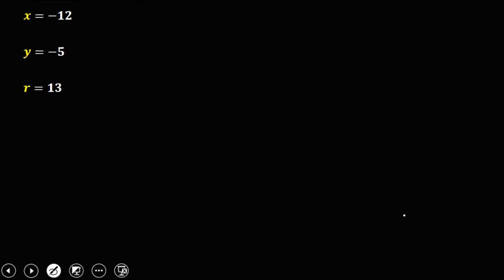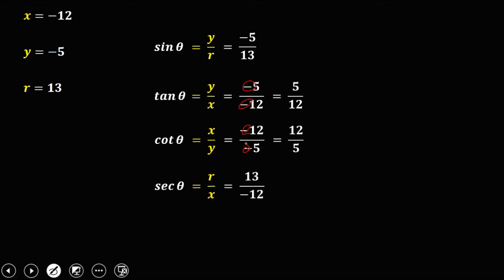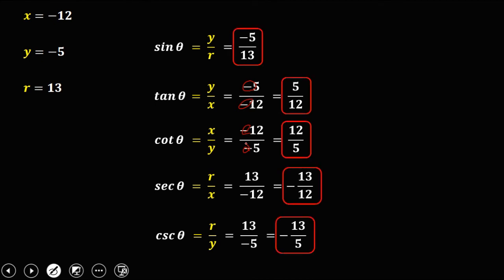Now that we have all three values — x equals negative 12, y equals negative 5, and r equals 13 — we can solve the remaining circular functions. Sine theta is y over r, that's negative 5 over 13. Tangent theta is y over x, that's negative 5 over negative 12, which is positive 5 over 12. Cotangent theta is x over y, that's negative 12 over negative 5, or positive 12 over 5. Secant theta is r over x, that's 13 over negative 12, or negative 13 over 12. Cosecant theta is r over y, that's 13 over negative 5, or negative 13 over 5. These are the remaining circular functions.